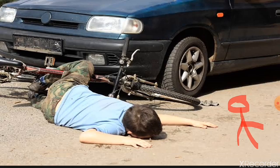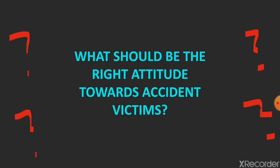Here is an example of an accident victim. You can see this boy was being hit by a car — so this is a road accident. This is an example of an accident victim. Now, what should be the right attitude towards accident victims? We have seen people who take pictures of accident victims, or who just stare, or who saw an accident victim and took off without trying to help.